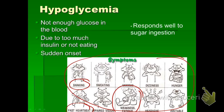The treatment for low blood sugar is to give the patient some form of sugar. Keeping a candy bar or a non-diet soda on hand tends to bring blood sugar up relatively quickly.